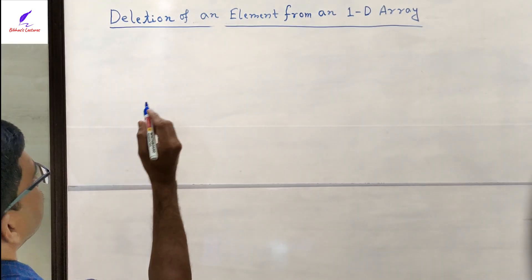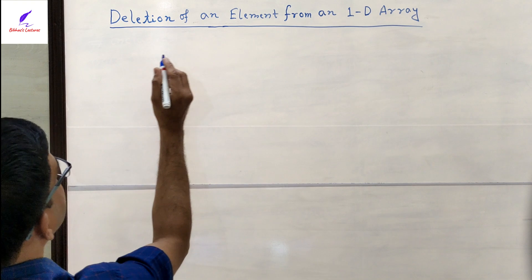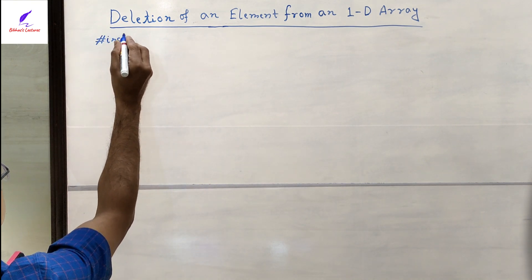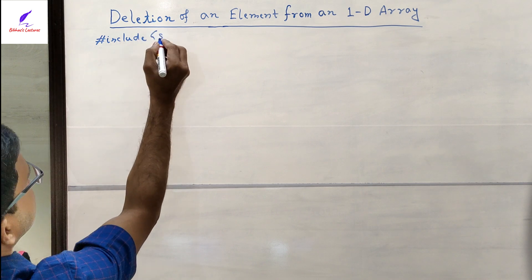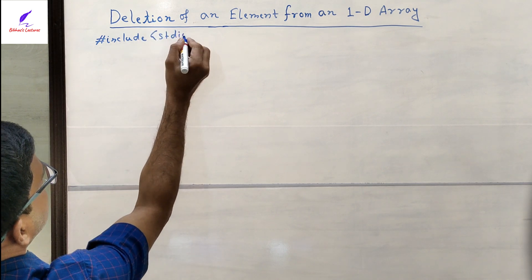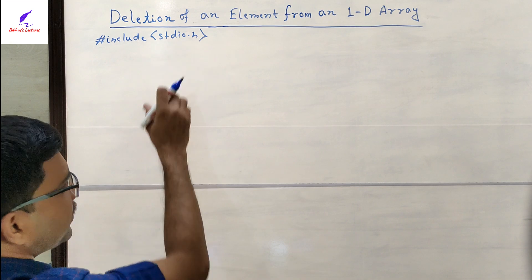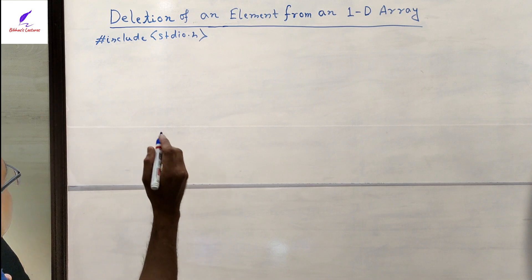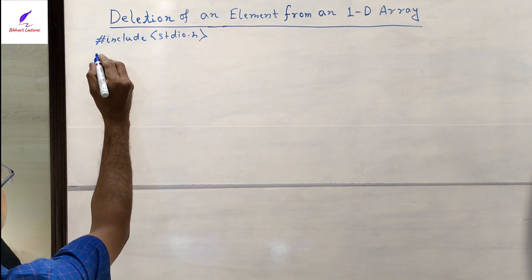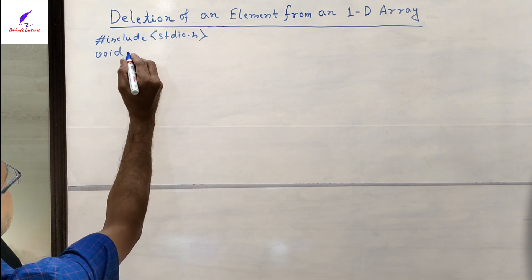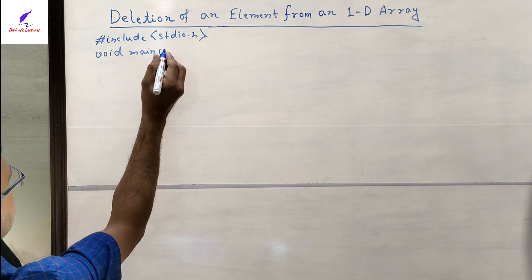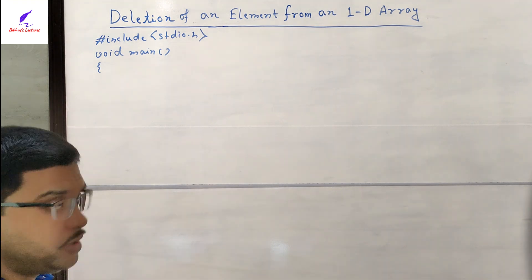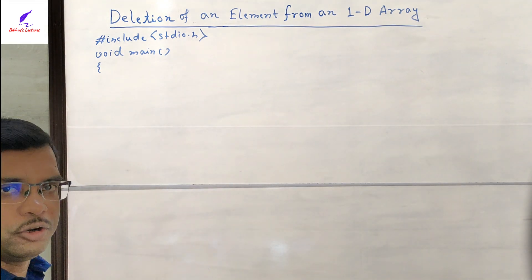First, what you have to do is include the header file: #include stdio.h. This is the header file where the printf and scanf functions are defined — I discussed this in my previous video. Now we have to start the main function. The return type is void main, meaning after executing the main function it will not return any value.